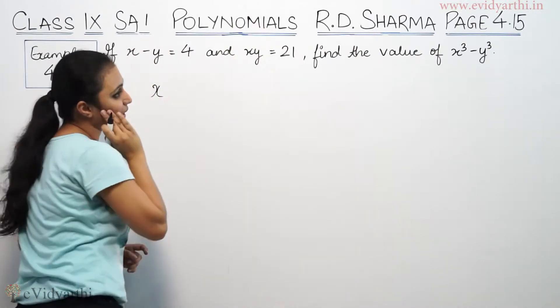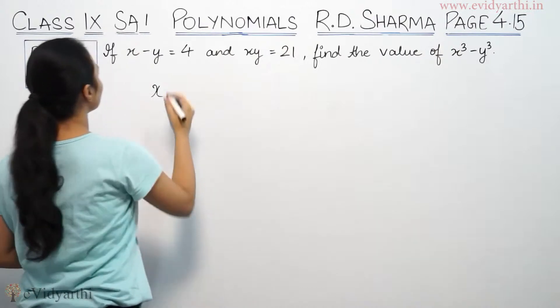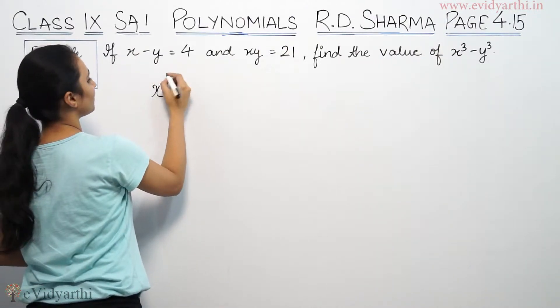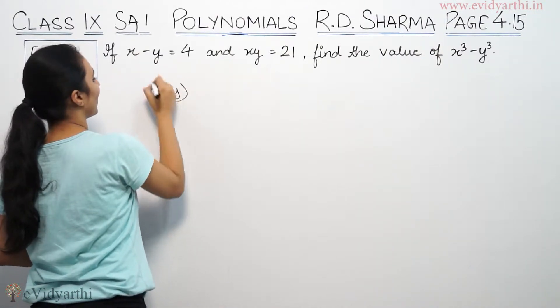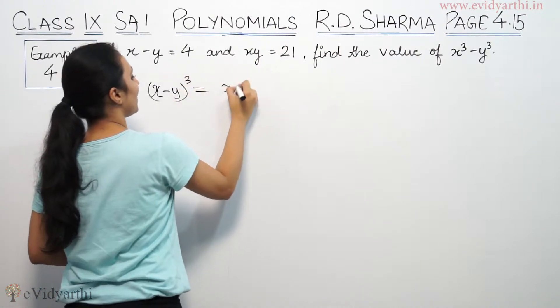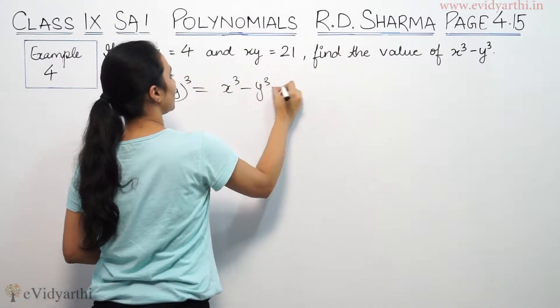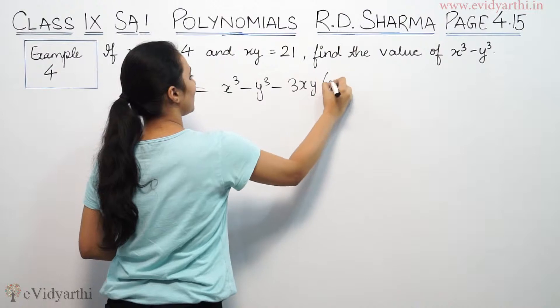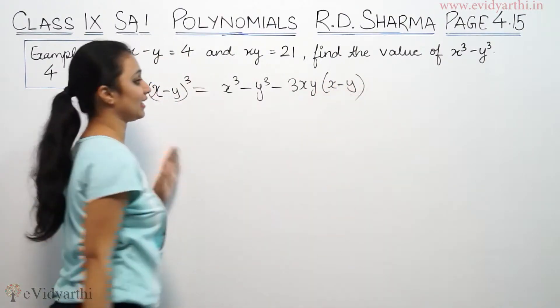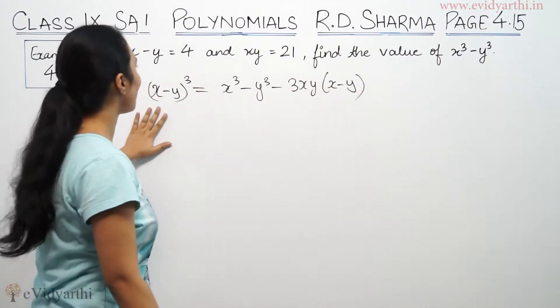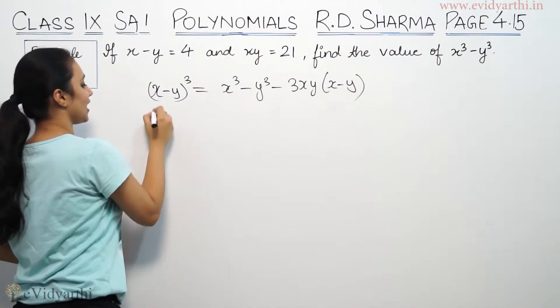So x cube minus y cube, this is x minus y whole cube is equal to x cube minus y cube minus 3xy bracket x minus y. So x minus y is 4, that means 4 cube.